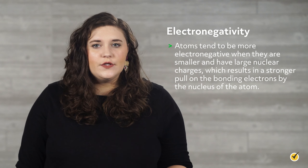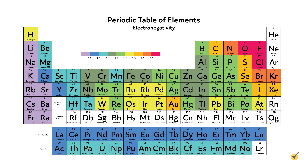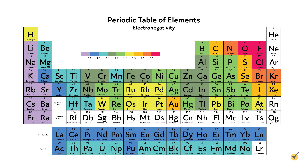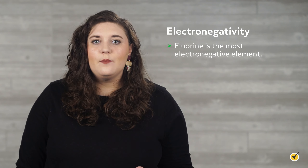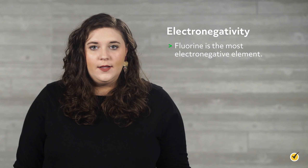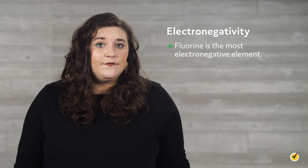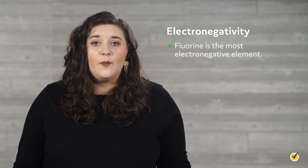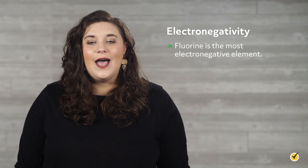Atoms tend to be more electronegative when they are smaller and have large nuclear charges, which results in a stronger pull on the bonding electrons by the nucleus. This is very similar to the electron affinity of an atom, which describes a free atom's pull on an electron. Similar to trends in electron affinity, as we go from left to right and up the periodic table, elements get more electronegative, with the exception of the noble gases. This means fluorine is the most electronegative element. The elements have been assigned relative values on the Pauling scale, where fluorine has the highest value of 4. It's unlikely that you'll ever have to memorize these numbers — most of the time you'll be able to reference them.